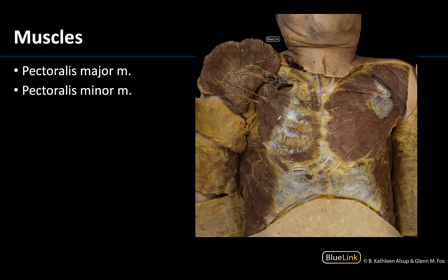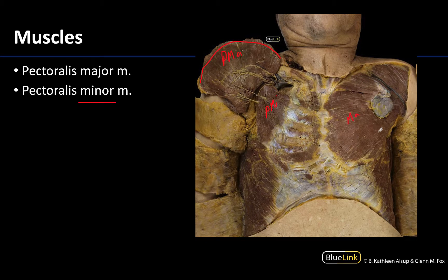In order to see the pectoralis minor, you have to reflect the pectoralis major — it will not be visible until that happens. You cut the attachments of the pectoralis major, and in this case we've cut some of those more proximal attachments in order to reflect it up, leaving its attachment on the humerus. Underneath, you will see the smaller pectoralis minor muscle, which has its attachment on the ribs and extends to the coracoid process of the scapula. On the unreflected side, I can only see the major.